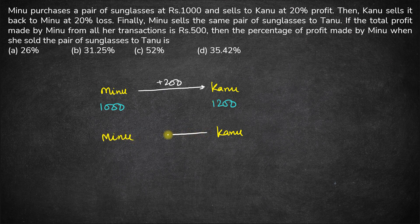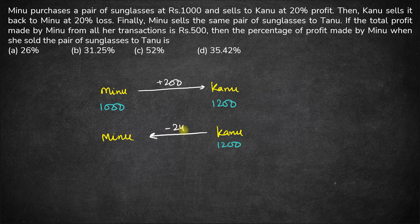Kanu sells it back at a 20% loss. Since Kanu had purchased it for 1200 rupees, 20% of 1200 is 240. So she sells it at 240 less than her cost price — the selling price is 1200 minus 240, which is 960 rupees. So Minoo purchases it again for 960 rupees.